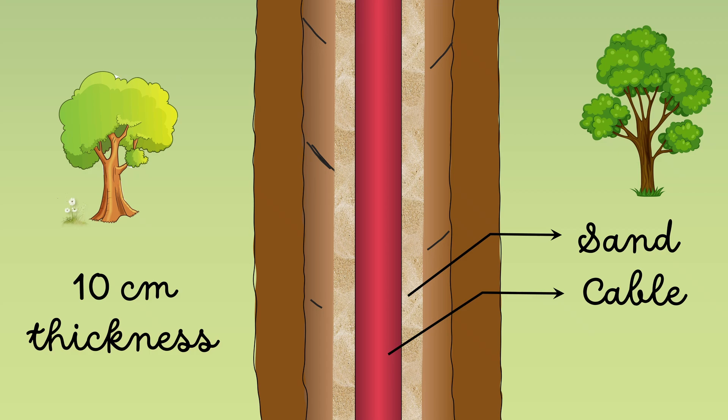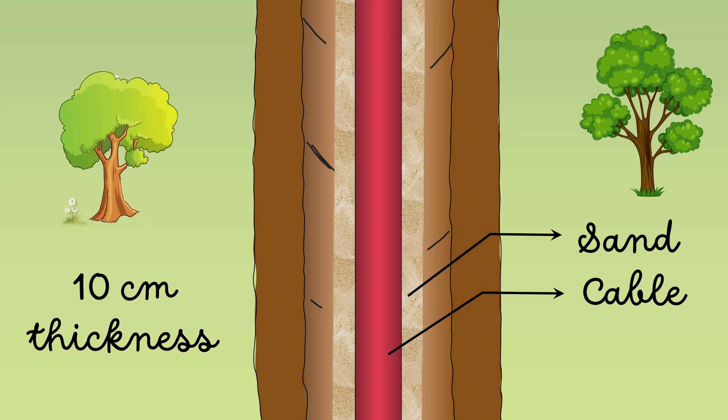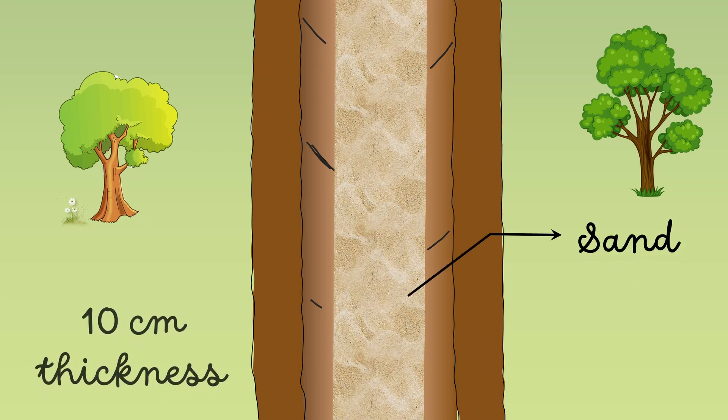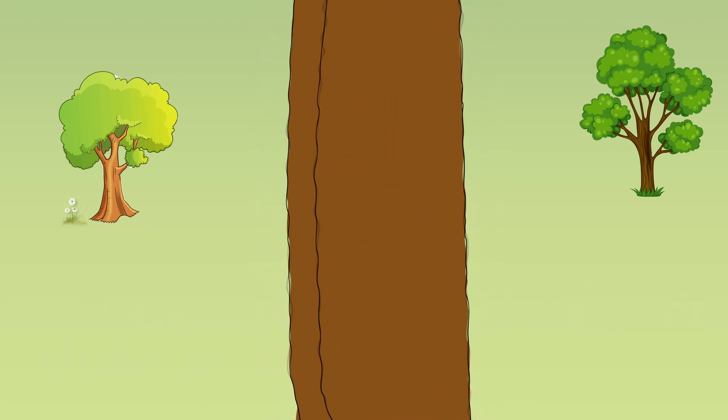The sand prevents the entry of moisture from the ground and thus protects the cable from decay. After the cable has been laid in the trench, it is covered with another layer of sand of about 10 centimeter thickness. The trench is then covered with bricks and other materials in order to protect the cable from mechanical injury.